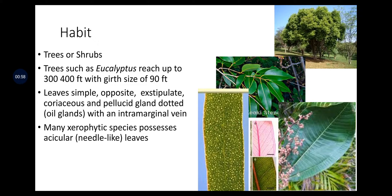Habit: trees and shrubs. Trees like Eucalyptus reach up to 300 to 400 feet with a girth size of 90 feet. Leaves are simple, opposite, exstipulate, coriaceous and pellucid gland-dotted — that is, with an oil gland and an intramarginal vein. Many xerophytic species possess acicular, that is needle-like, leaves.